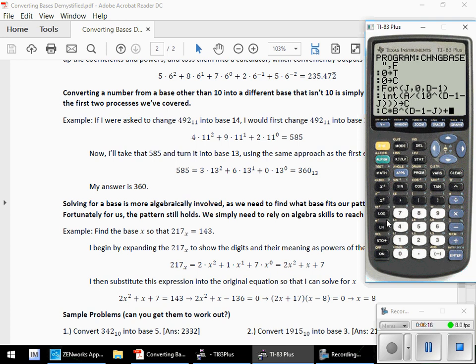Close the parentheses on that exponent, close on the denominator, close on the integer function. I'm going to store that as my new coefficient C. Enter. Then what I want to do is take that coefficient C times whatever base I'm using raised to the D minus one minus J power.